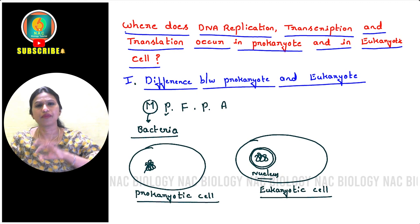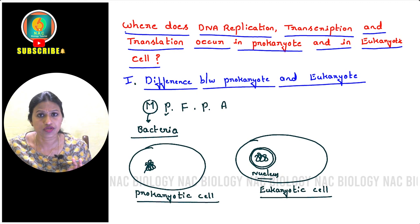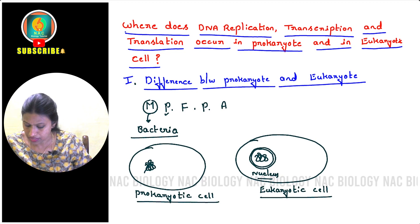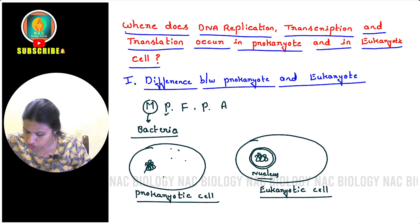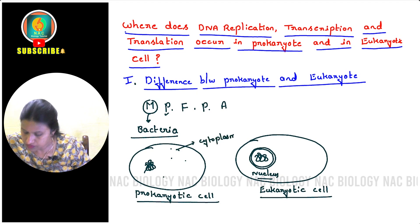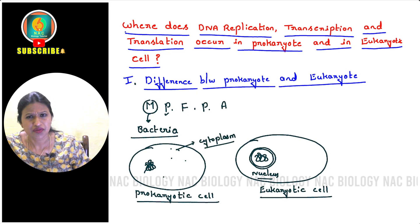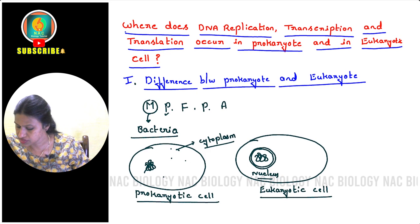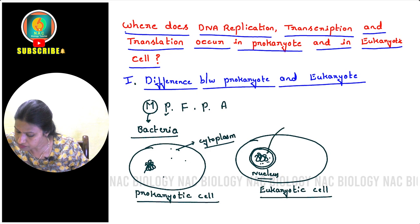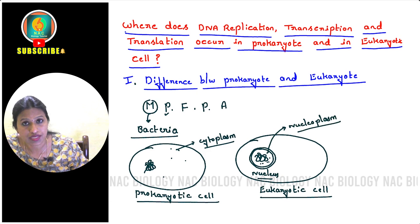In the prokaryotic cell, many organelles are present but all are suspended within the cytoplasm. In the eukaryotic cell, organelles are separated by membranes. For example, the fluid inside the nucleus I can consider as nucleoplasm, not cytoplasm, because there is a membrane around it separating it.